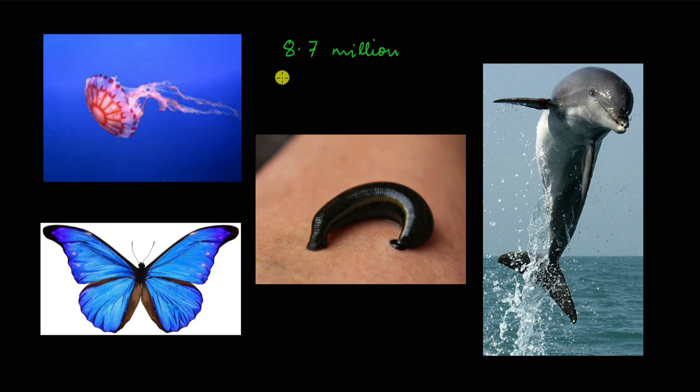So the animal kingdom has several phyla — singular phylum, plural phyla. In this video, we will take an overview of all the phyla under the animal kingdom and look at some very basic criteria that we use to differentiate between them. If you're not very familiar with how animals are classified, you will come across many unfamiliar names. Don't worry about remembering the names just yet — just try to understand the basic criteria used to classify animals into these different phyla.